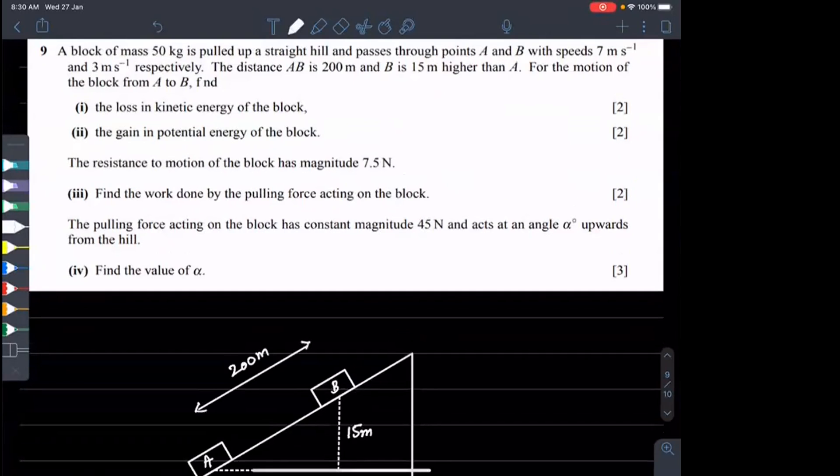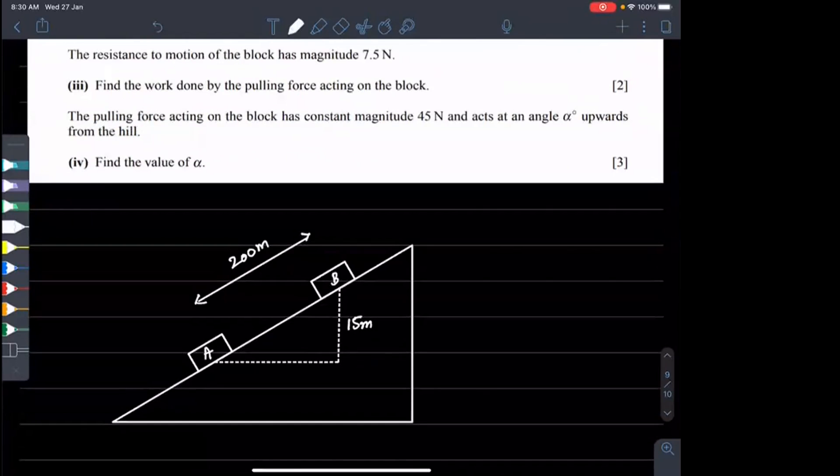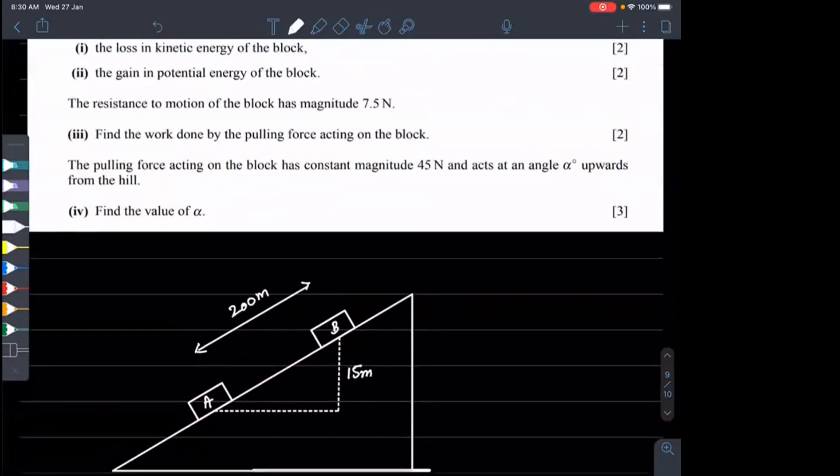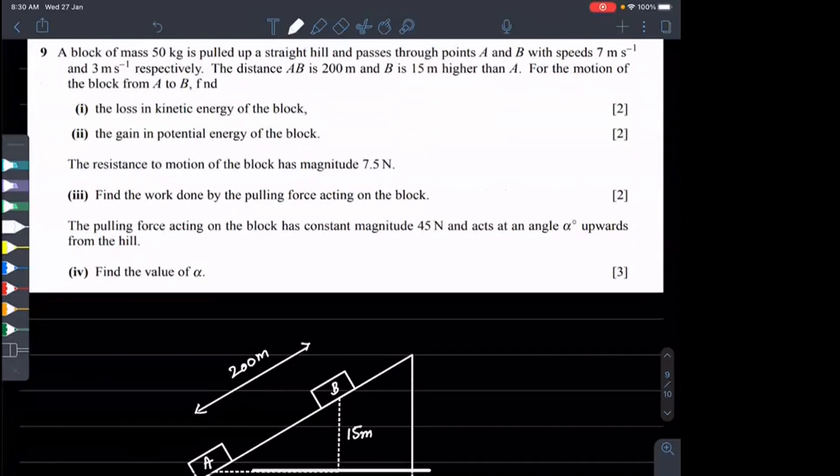This distance will help us. Eventually, if you can see, you will see this triangle and this alpha angle. It will help us. Here the speed is 7 and here the speed is 3.